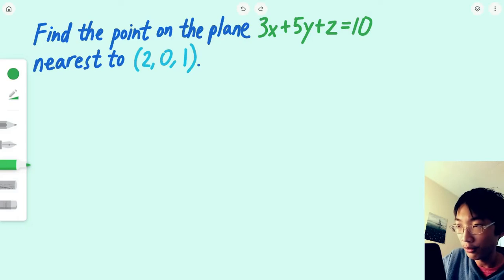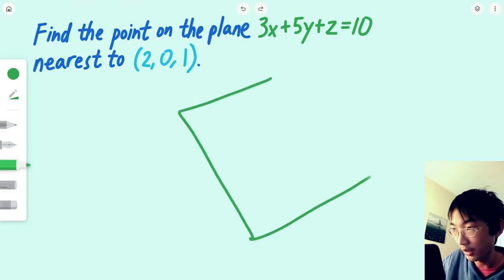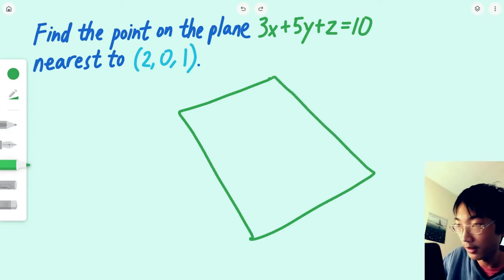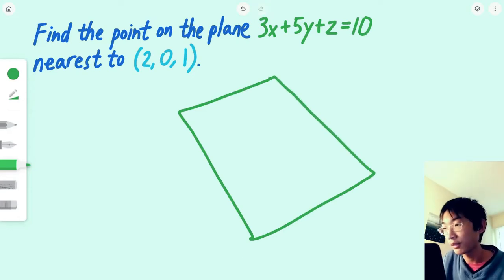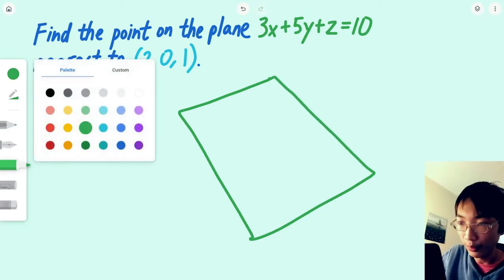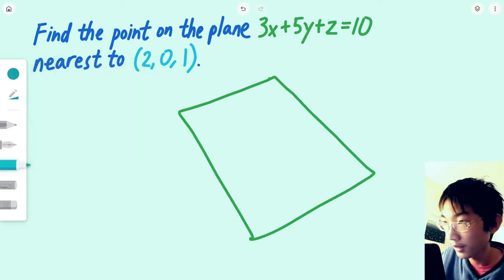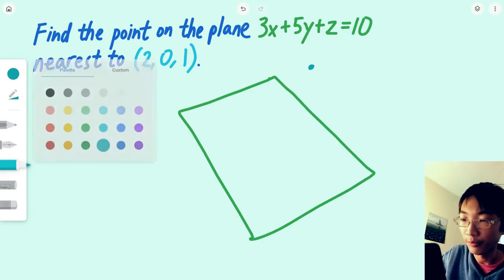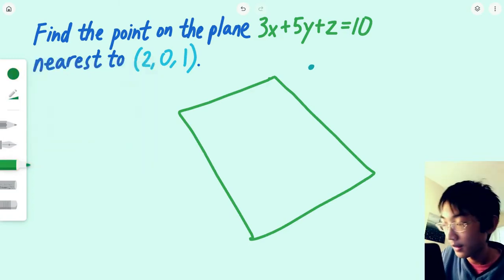Let's start by drawing this problem out. We have a plane, which is the set of all points satisfying the equation 3x plus 5y plus z equals 10. We have a point near the plane with coordinates (2, 0, 1), and we have a point on the plane which is the closest part of the plane to (2, 0, 1).